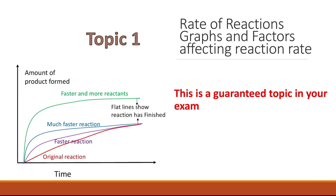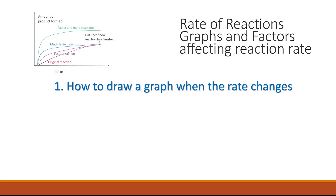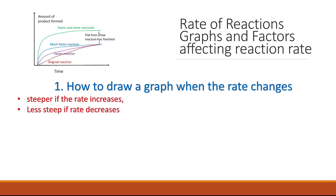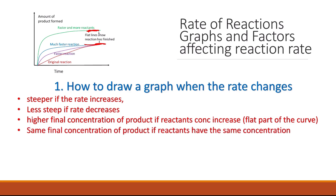This is a guaranteed topic in your exam. You need to know how to draw a graph when the rate changes. The line will be steeper if the rate increases, and less steep if the rate decreases. The highest point — the flat part of the line — represents the highest concentration of product produced, which will be exactly the same if there is a change in temperature, use of a catalyst, or surface area to volume ratio. It would only be a higher value if you use more of the reactant.